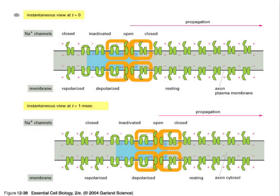At the ion channel level, starting in the middle of the axon, we can see open channels allowing sodium ions to move into the cell, while channels just behind are inactivated and blocking ion movement. Channels ahead, where the action potential has not yet arrived, are still closed. A short time later, the current spreads to neighboring channels, which open, that portion of the cell depolarizes, current spreads further, and the action potential is propagated along the axon.